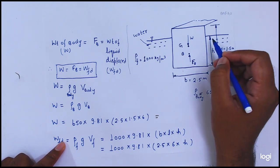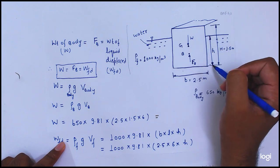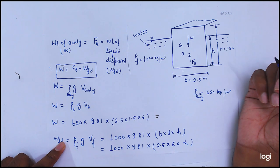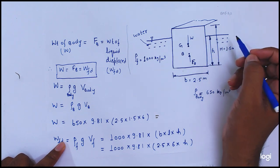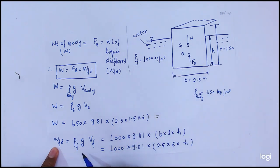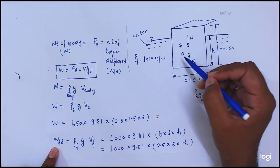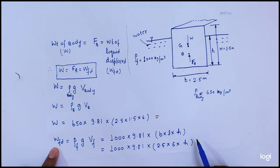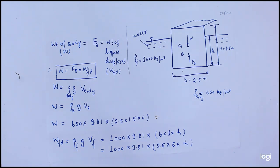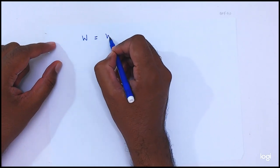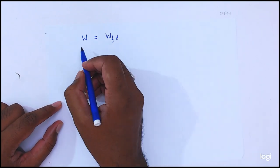The width and length are the same, but the height — only this small height h is submerged in the water, so only this much volume is displaced. We don't know the height h yet. The weight of fluid displaced is equal to density of water times G times volume of fluid, which is B times L times h. So B equals 2.5 meter, L equals 6 meter, but h we don't know.